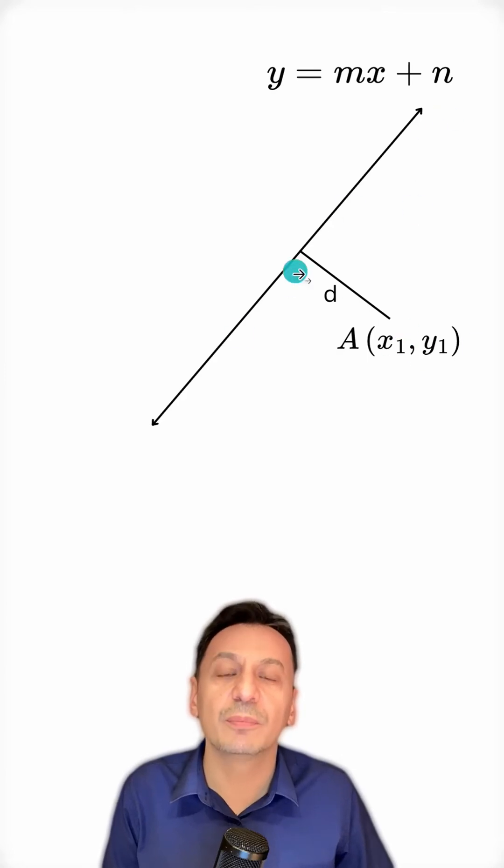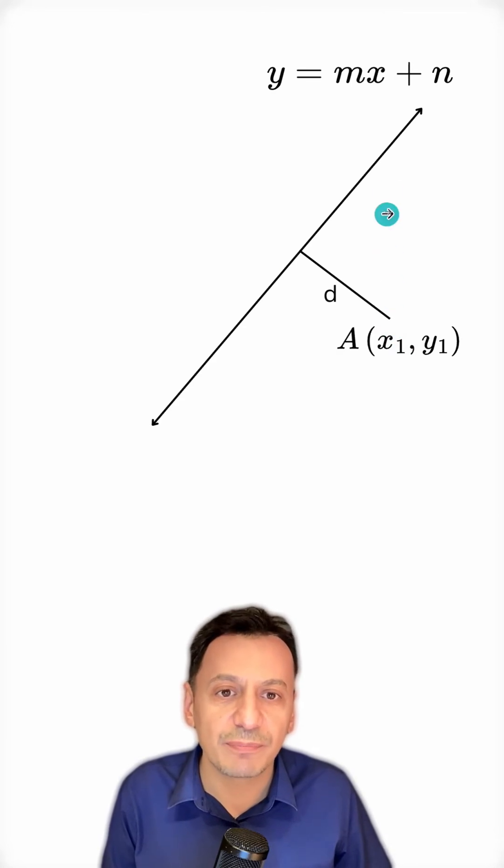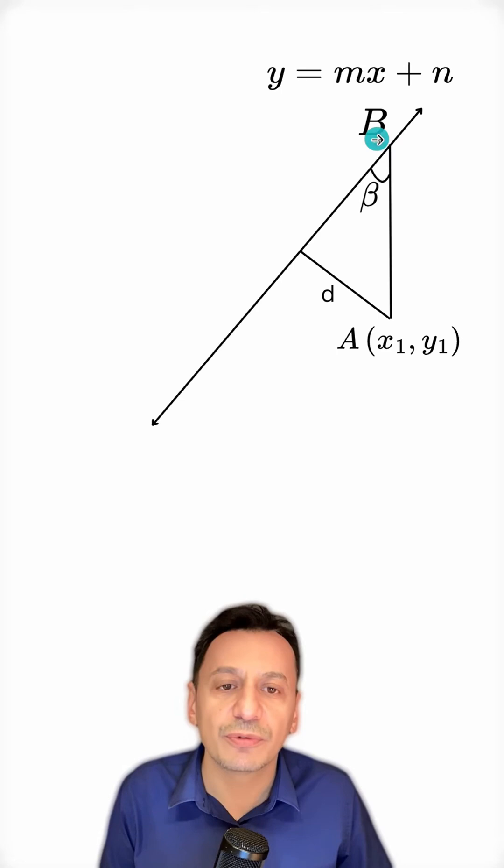Let's calculate the distance from point A to this line here. First, I draw a line segment from point A perpendicular to the line. I call the point formed here point B.